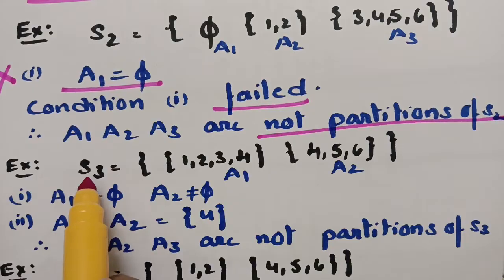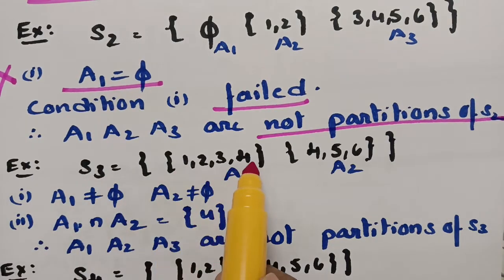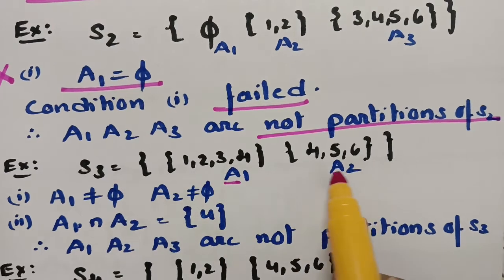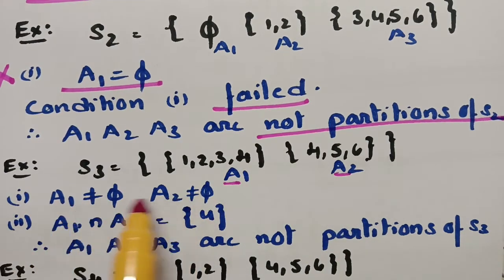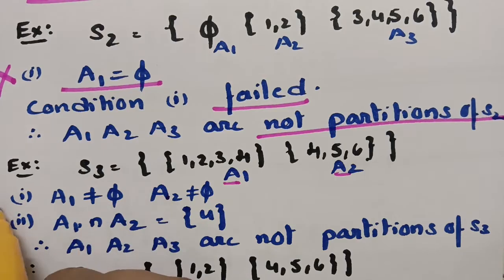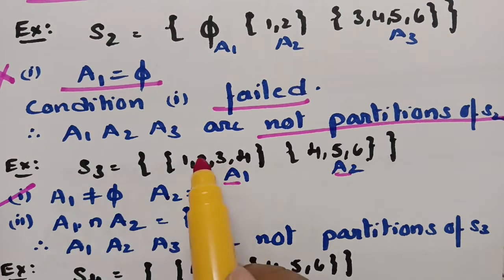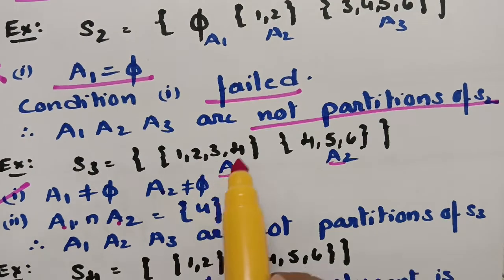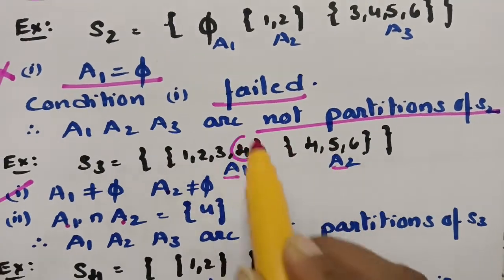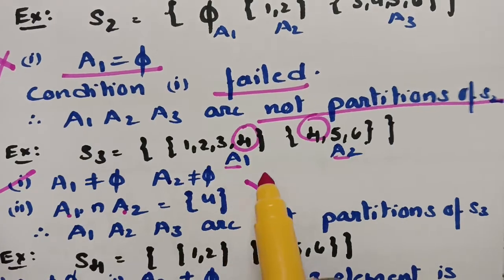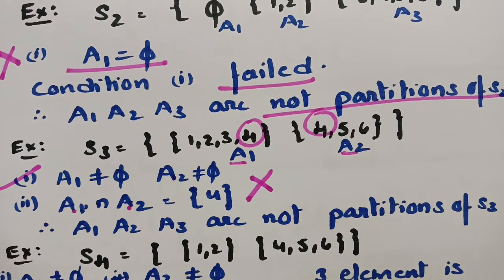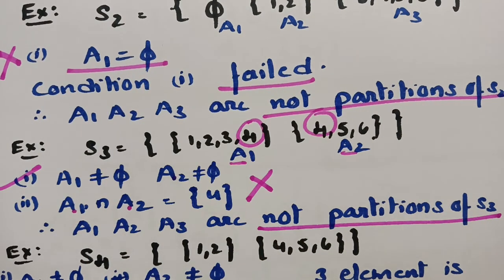For the third example S3: A1 = {1, 2, 3, 4} and A2 = {4, 5, 6}. The first condition — no subset is empty — is satisfied. However, A1 ∩ A2 contains the common element 4, so the second condition does not hold since the sets must be disjoint. Therefore A1 and A2 are not the partitions of S3.